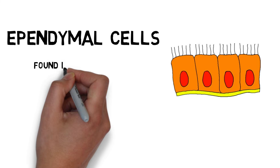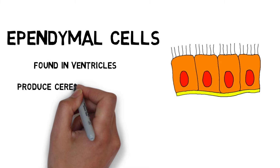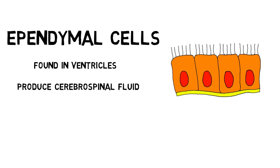Ependymal cells are found in the walls of the ventricles, where they produce cerebrospinal fluid, which then circulates around the brain, performing many functions, including protecting the brain from injury and removing waste products from the brain.